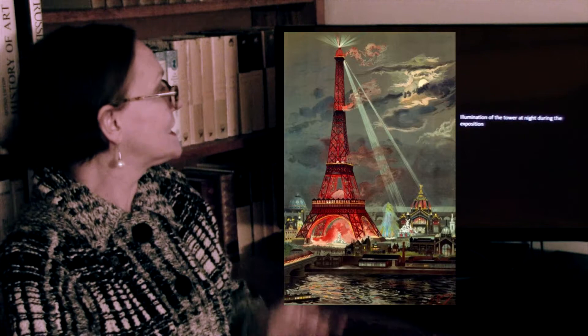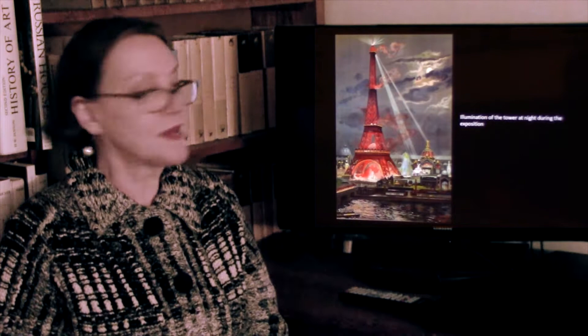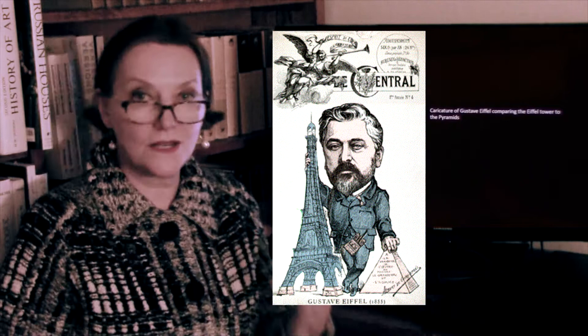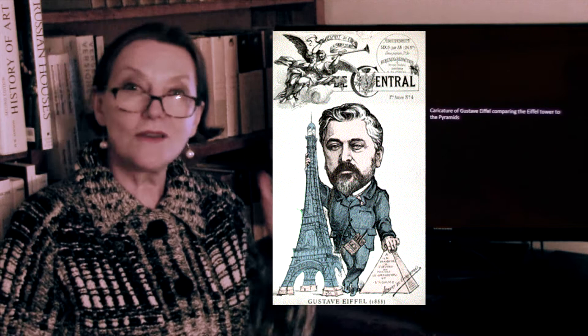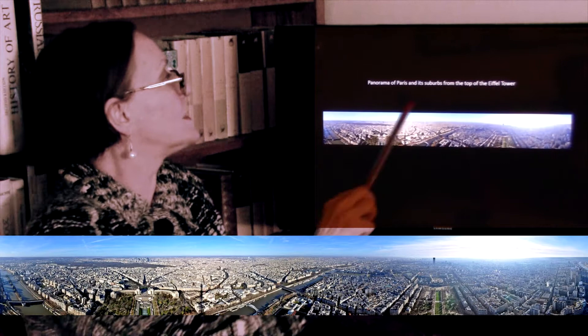They would often light up the tower with red light, and we'll see paintings of that. You can see the illumination of the tower at night during the exposition. Gustave Eiffel, the engineer, compared the Eiffel Tower with the Great Pyramid of Giza — nothing of that height had ever been created. And from the top, the panorama of Paris and its suburbs looks geometric.